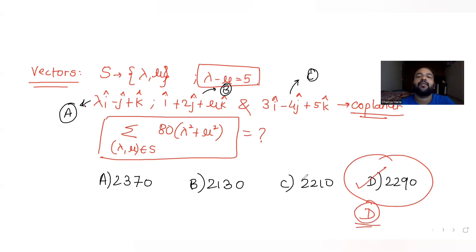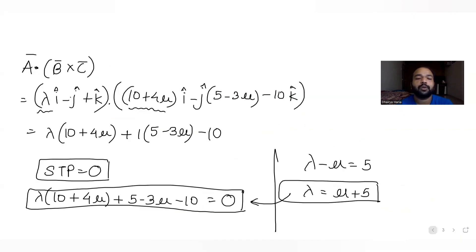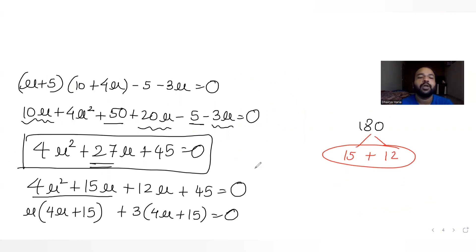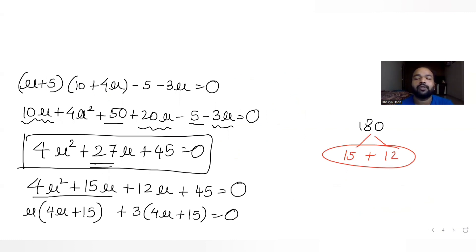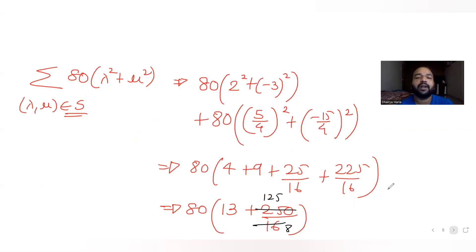I hope you have understood how to solve this type of question involving coplanar vectors. We used the scalar triple product condition, set it equal to zero, substituted lambda = mu + 5, and solved the resulting quadratic by splitting the middle term to get two values of mu and two values of lambda. Plugging into the expression gave us the final answer of 2290, which is option D.